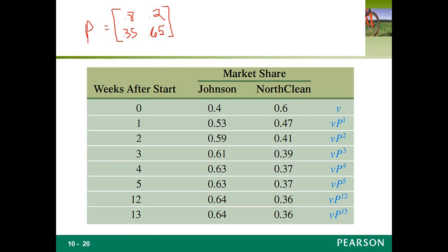Now if we use an initial probability vector, which gives the market share for each firm at the beginning of the experiment, we're going to use 0.4 and 0.6 as state 0 — the initial vector proportions. If we multiply the vector by P, this gives us the proportion of the next generation, the next repetition, over and over again.